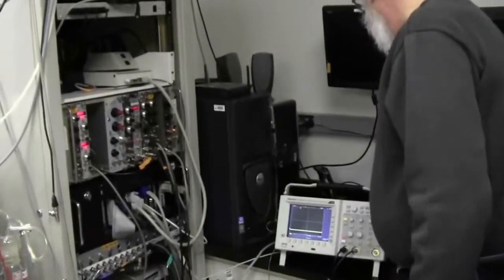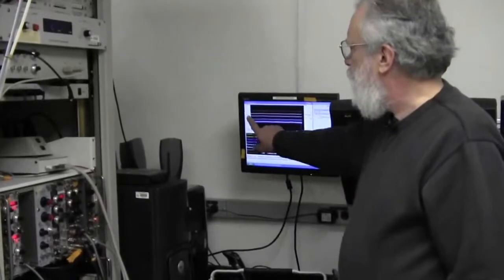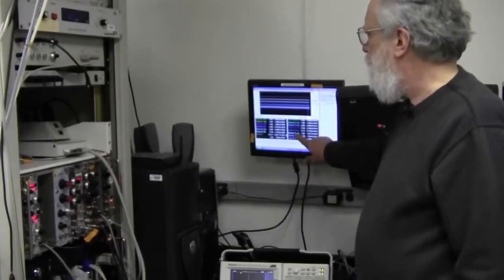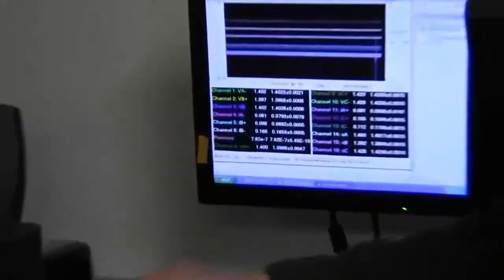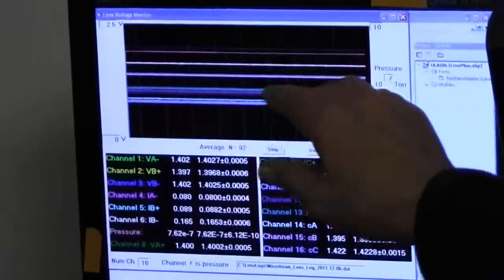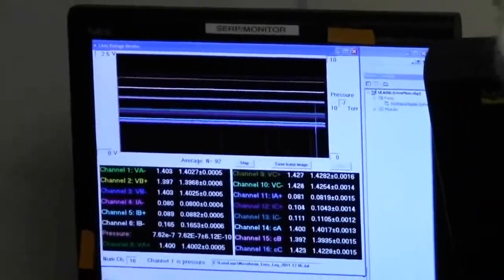But there also is a monitor detector, a monitor computer. This shows the lens voltages and the control voltages that are being sent to the power supplies and nice straight lines are good. The system is behaving normally and smoothly.